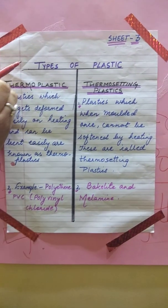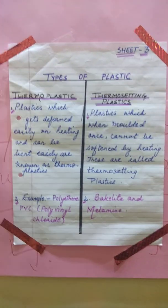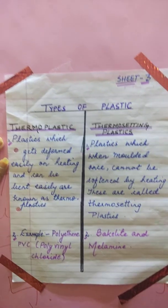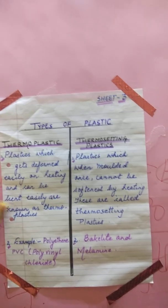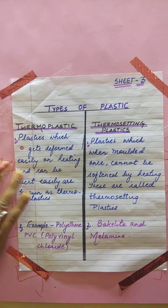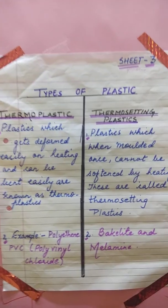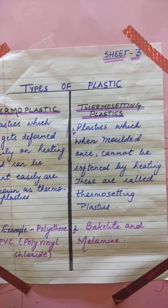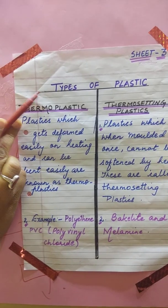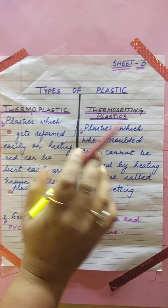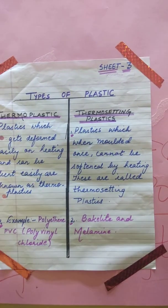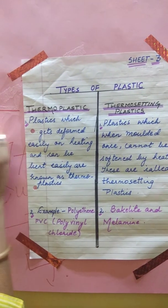Now children, let's come to the types of plastic. I told you it will be very easy for you to understand the types of plastic because you have already learned the arrangement of units. There are two types of plastics: number one is thermoplastic, and another one is thermosetting plastics.